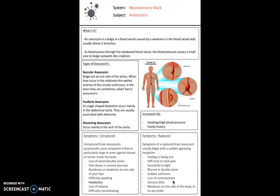In terms of increased risk of developing an aneurysm, people who smoke, people who have high blood pressure, and people who have a family history of aneurysms are more likely to be sufferers.